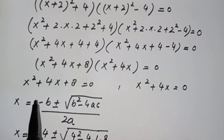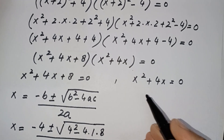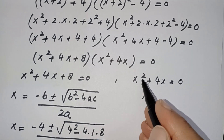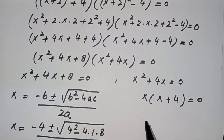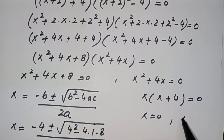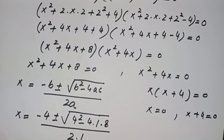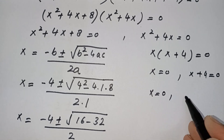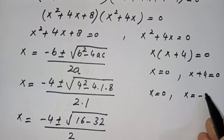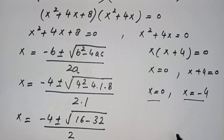Now for x² + 4x = 0, we take x common: x(x + 4) = 0. This gives x = 0, and x + 4 = 0, so x = −4. These are our two real solutions: x = 0 and x = −4.